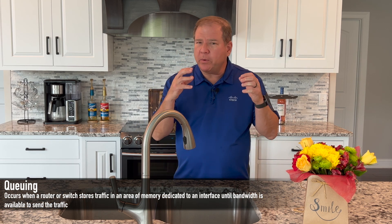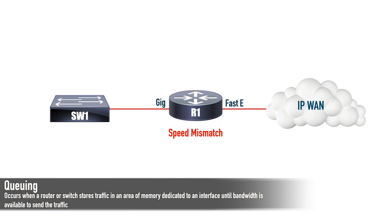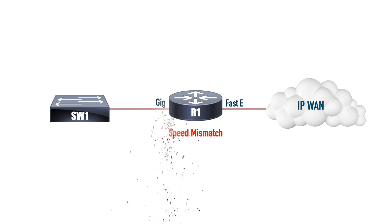Imagine that we have a router sitting at the internet boundary of a company. On the LAN side, we're coming in at a gig rate, and on the WAN or internet side, we're going out at let's say 100 meg. That's a 10 to 1 speed mismatch.